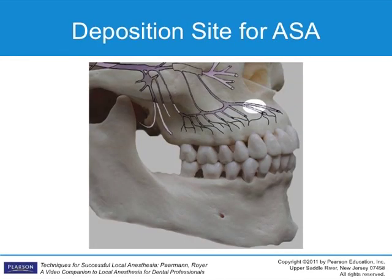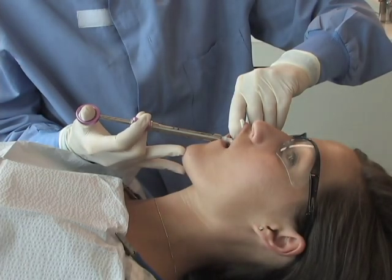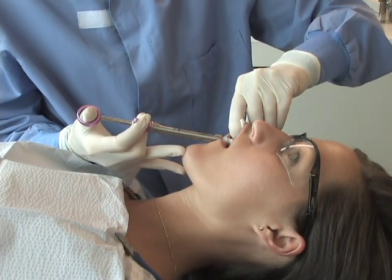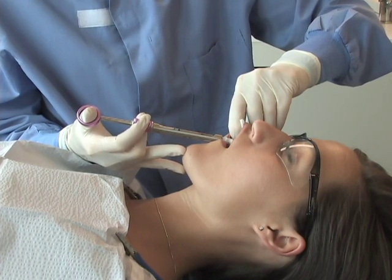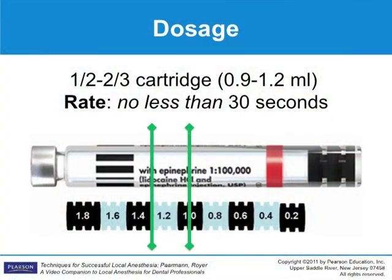Aspirate at the deposition site. It is slightly more difficult to aspirate in this area than other areas of the mouth. Be careful not to remove the syringe from the tissue while applying negative pressure to the thumb ring. A minimum of one half of a cartridge over a period of not less than 30 to 45 seconds should be deposited. The volume will vary depending on patient factors and planned procedures.